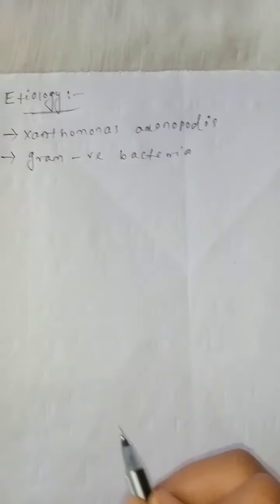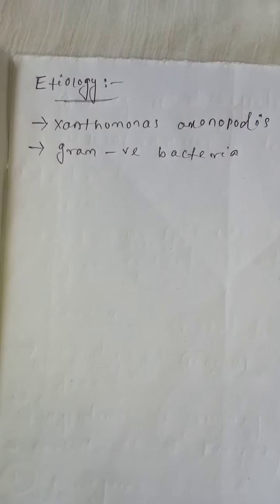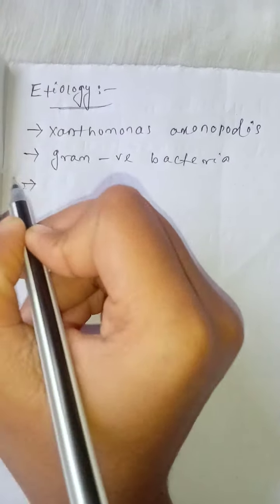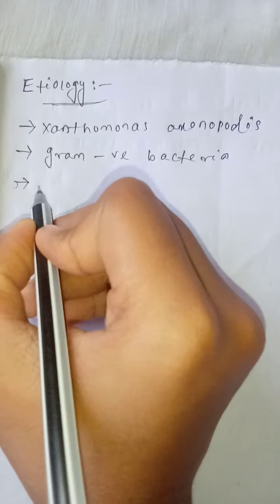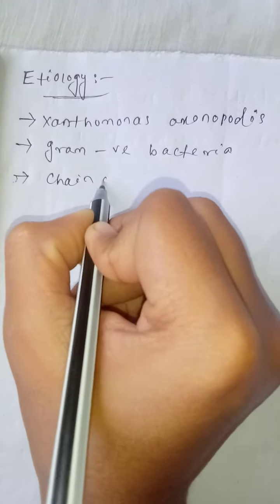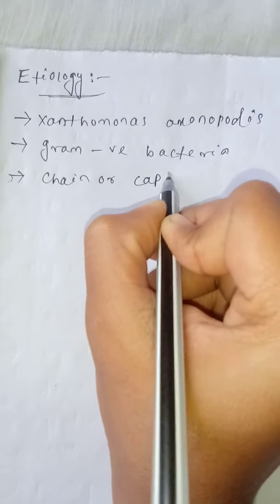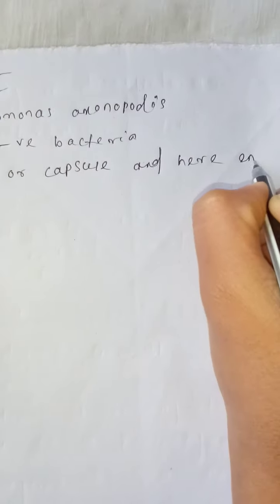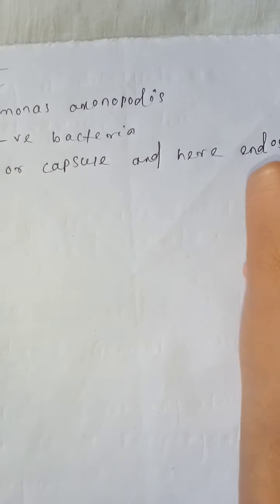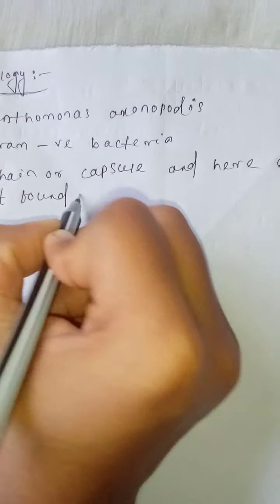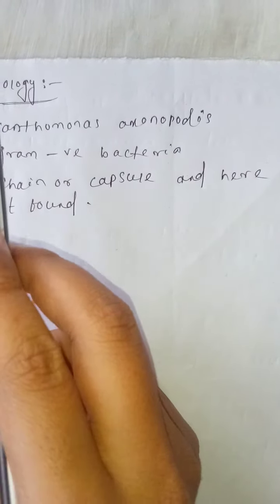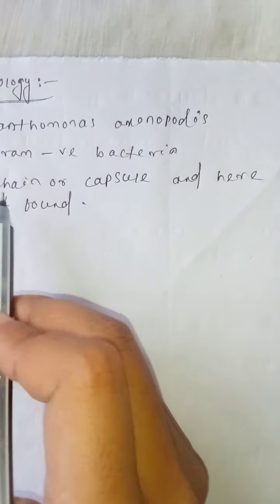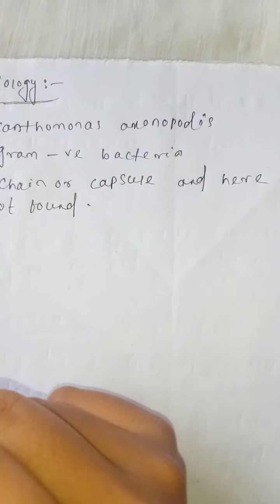These types of bacteria form a chain or capsule. Here endospore is not found. And these types of bacteria mainly form chain or capsule.